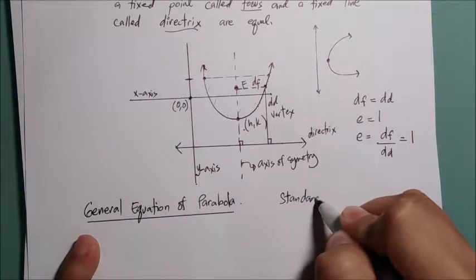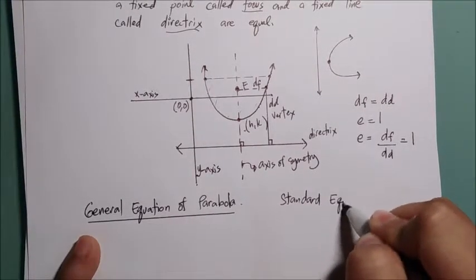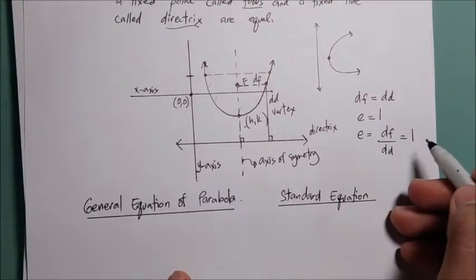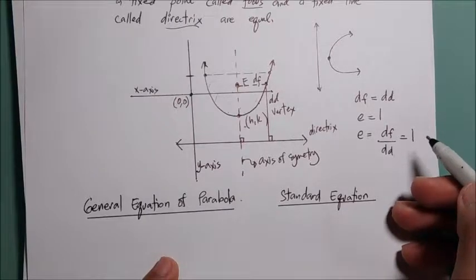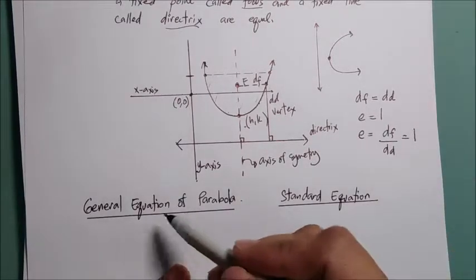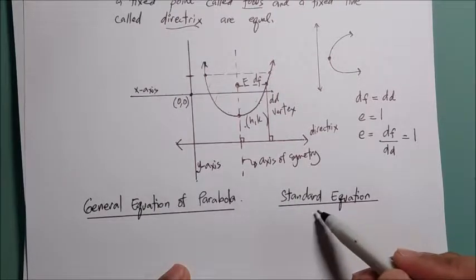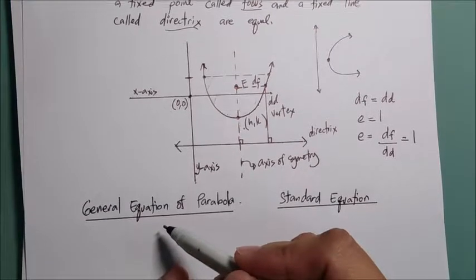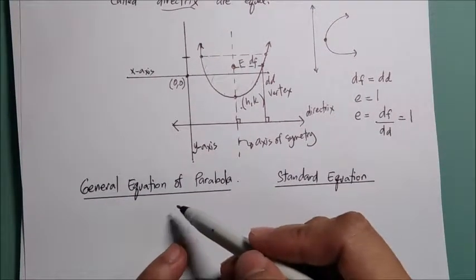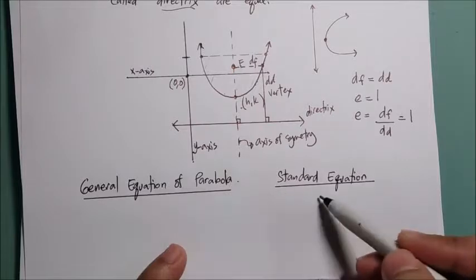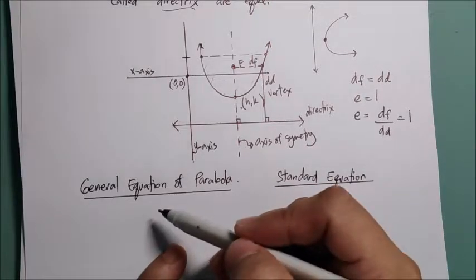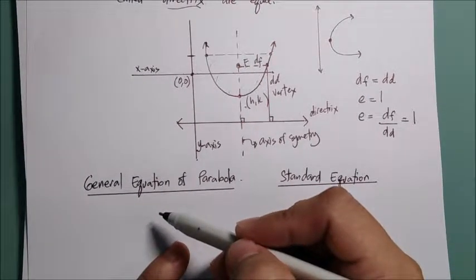The standard equation and general equation are different in form, but a general equation can be converted to a standard equation, and standard can be converted into a general equation — that depends on what is given in the problem. If given the standard form, you can easily identify the vertex, the length of the latus rectum, and all the elements. With the general equation, you can solve it by formula.